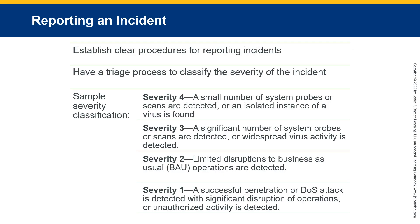Establish clear procedures for reporting incidents with a triage process to classify severity. Severity 4: a small number of system probes or scans, or an isolated virus instance. Severity 3: a significant number of probes or scans, or widespread virus activity. Severity 2: limited disruptions to business-as-usual (BAU) operations. Severity 1: a successful penetration or denial-of-service (DoS) attack with significant disruption, or unauthorized activity is detected.